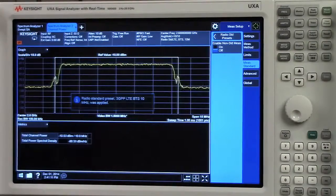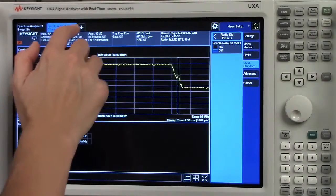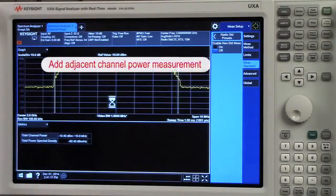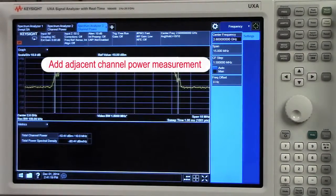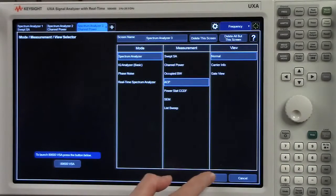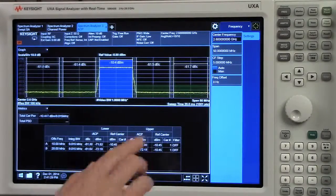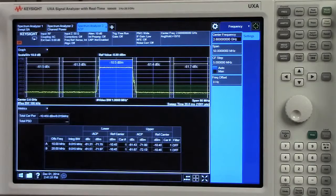Our radio standard is now set. In the same way, I can add an adjacent channel power measurement. I'll drop down, and I'll select adjacent channel power. And this measurement screen is already preset to our measurement standard.